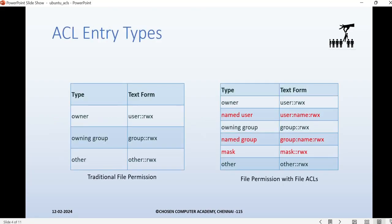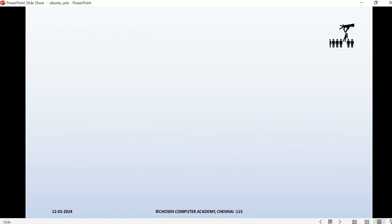Previously we had owner, owning group, and other — these were the three permission classes for a file in the traditional way. If you want to extend these permissions further, you can use ACLs by providing additional entry types like named user and named group. There's also another entry called mask, which keeps permissions in sync with the base owner and the named owners.